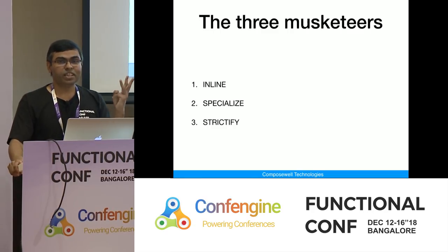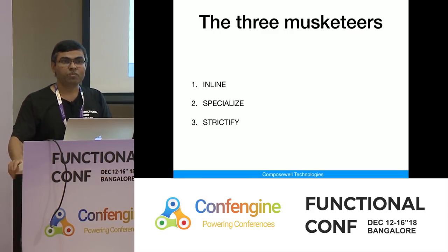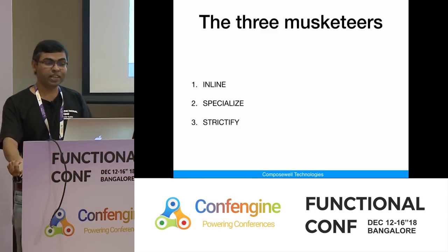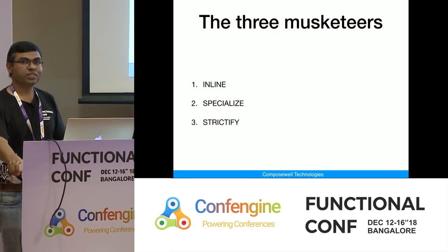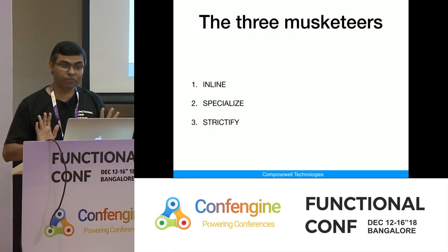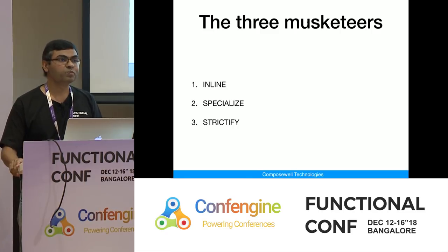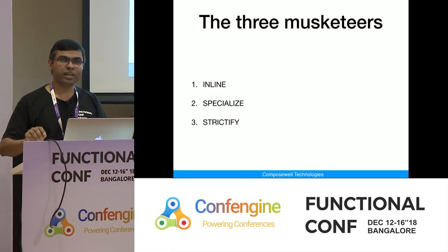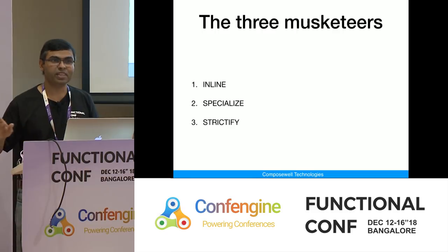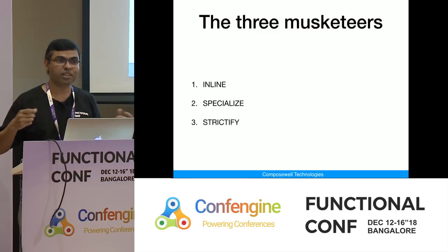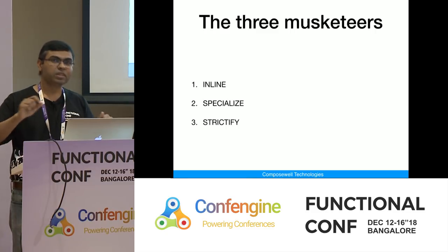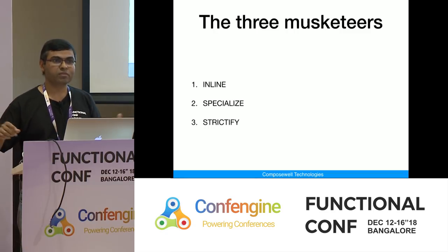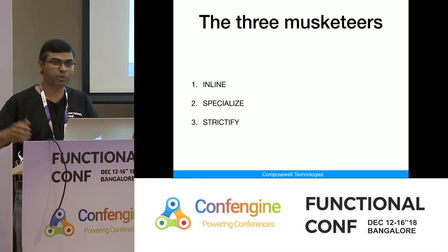The three things you need for optimization in Haskell are: inlining, specialization, and strictify your data structures where needed. If you take care of these three, you're good for more than 90% — I'd say 99% — of cases. You won't need much more unless you are hungry for the last drop of performance or you run into some corner case requiring a weird kind of optimization.